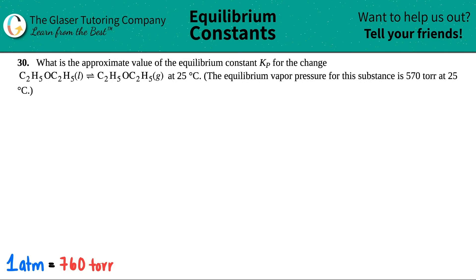Number 30: What is the approximate value of the equilibrium constant Kp for the change? We have this balanced equation at 25 degrees Celsius, and they said that the equilibrium vapor pressure for this substance is 570 torr at 25 degrees Celsius. So the first thing I'm going to do is rewrite this equation a little bit bigger.